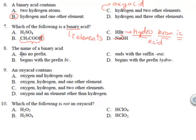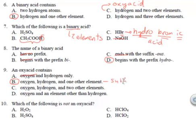The name of a binary acid has a prefix — that prefix is 'hydro.' It begins with the prefix hydro and ends with the suffix -ic. An oxy acid contains oxygen, hydrogen, and one other element. That other element could be sulfur, chlorine, nitrogen, phosphorus, or any of those elements. If it were sulfur, we'd be looking at H2SO4 — sulfuric acid — derived from the polyatomic ion sulfate.